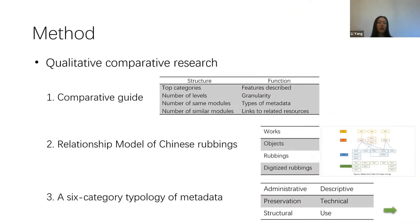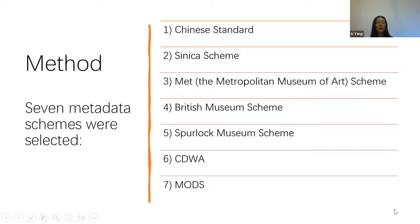A six-category typology of metadata was adopted, adjusted from Getty and NISO typologies, including administrative, descriptive, preservation, technical, structural, and use metadata. A total of seven metadata schemes were selected for comparison: the Chinese standard and the Cineca scheme (designed specifically for Chinese rubbings); the Met scheme, British Museum scheme, Spurlock Museum scheme, and CDWA (general schemes for museum collections including both Chinese and brass rubbings); and MODS (covering various types of resources including rubbings).